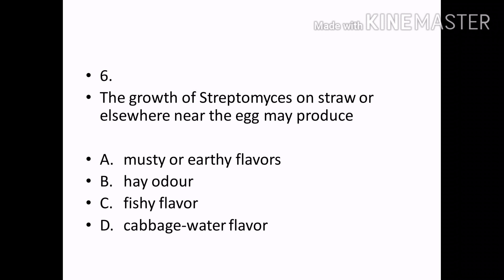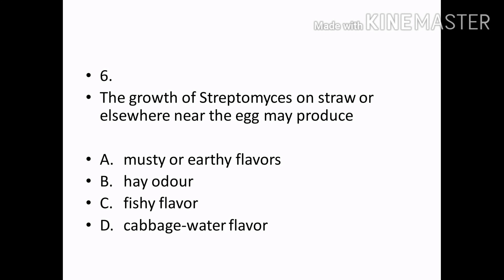The growth of Streptomyces on the straw or elsewhere near the egg may produce: Options — Musty or earthy flavors, hay odor, fishy flavor, cabbage/water flavor. Correct answer: Option A — Musty or earthy flavors.